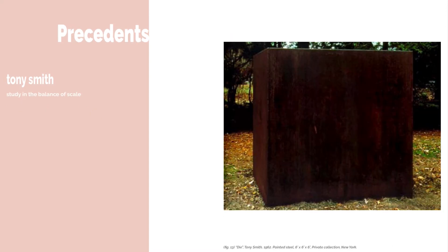I think Tony Smith's work is summed up well in a discussion he had with Robert Morris. Sculptor Robert Morris asked him, 'Why didn't you make it larger so that it would loom over the observer?' 'I was not making a monument,' was Smith's reply. 'Then why didn't you make it smaller so that the observer could see over the top?' Morris persisted. 'I was not making an object.' I think this conversation illustrates Smith's delicate use of scale.